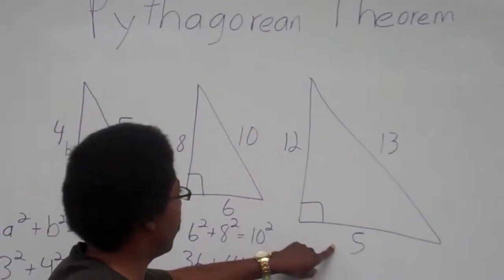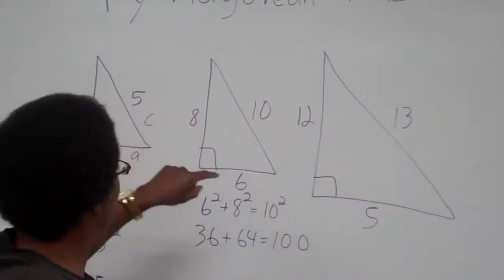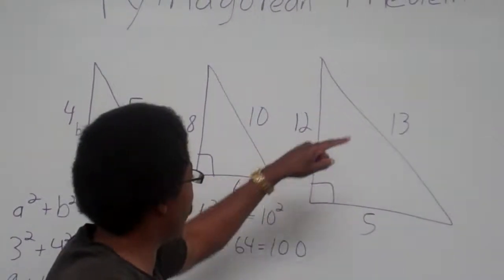So, let's try this one, 5, 12, 13. These are the three main triangles: 3, 4, 5; 6, 8, 10; and 5, 12, 13.